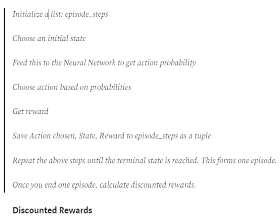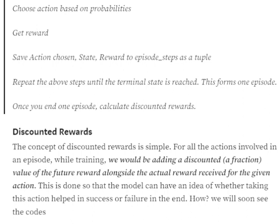You take an initial state, feed it to the neural network, get action probabilities, choose an action, get the next state, feed that to the neural network again, get another set of probabilities — you keep doing this until the episode ends. Once you reach a terminal state, meaning you've either failed or succeeded, that forms one complete episode.